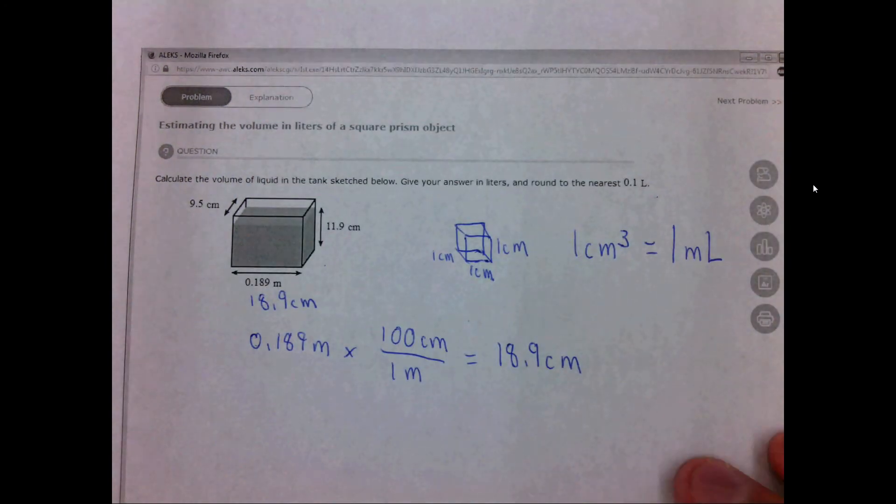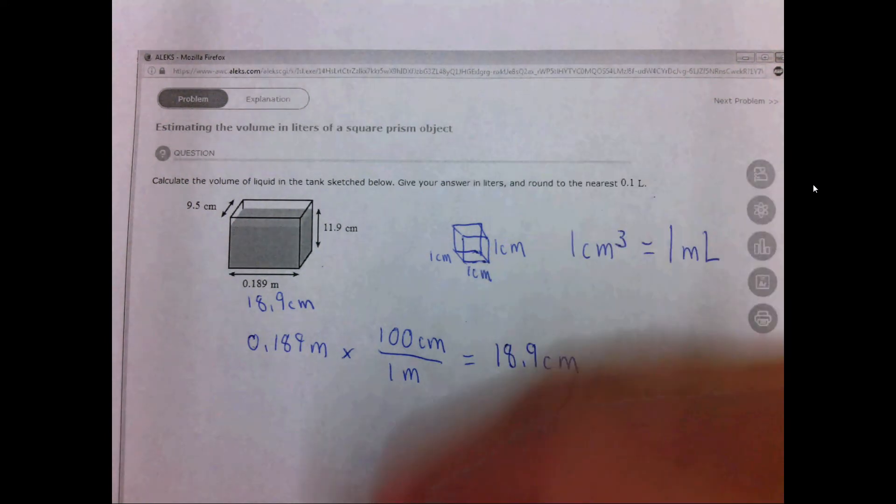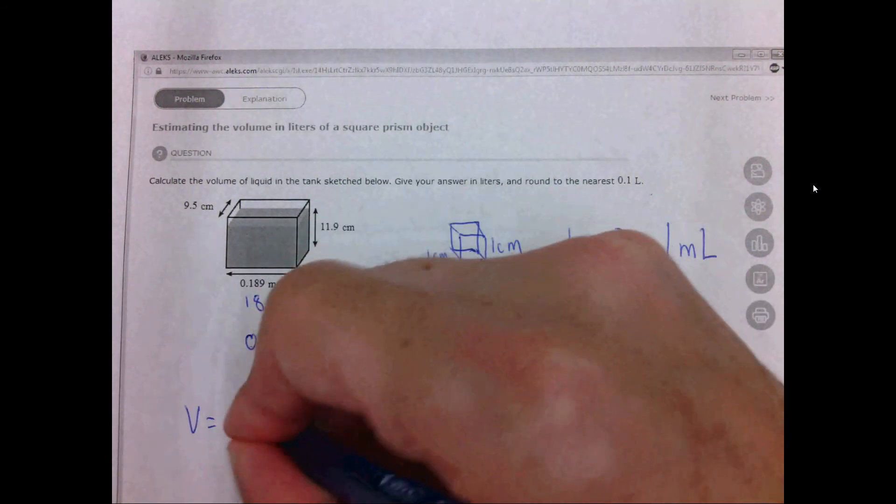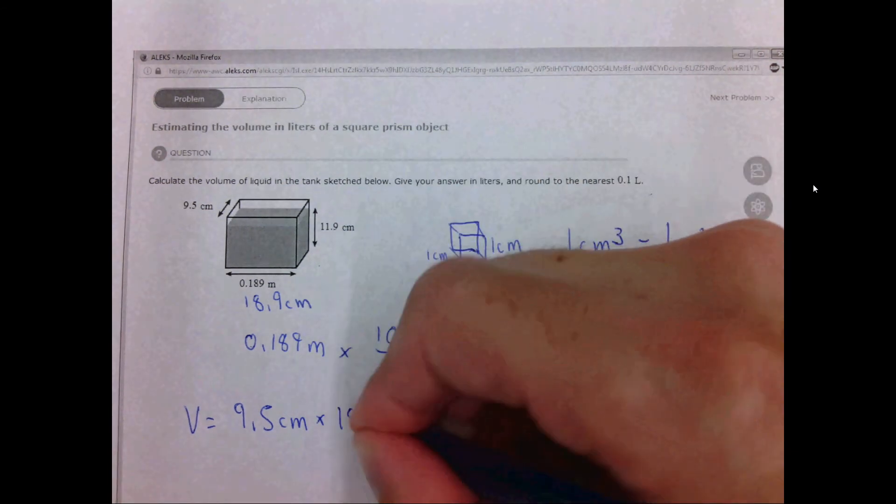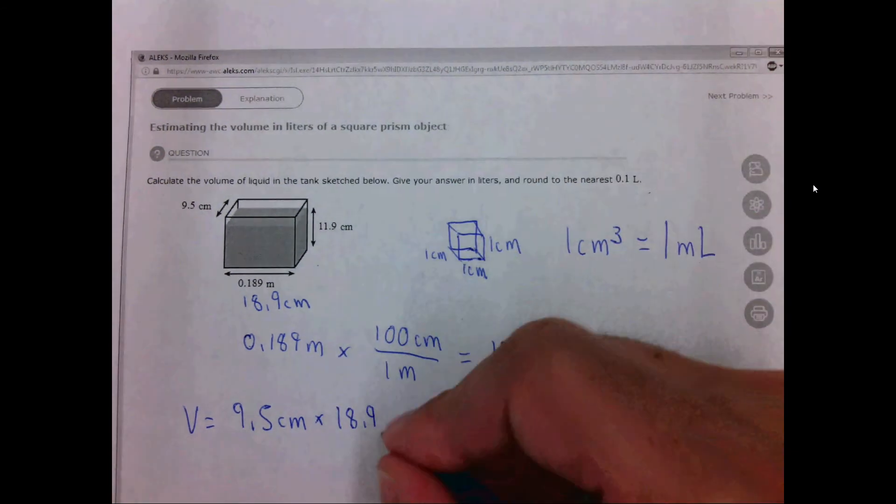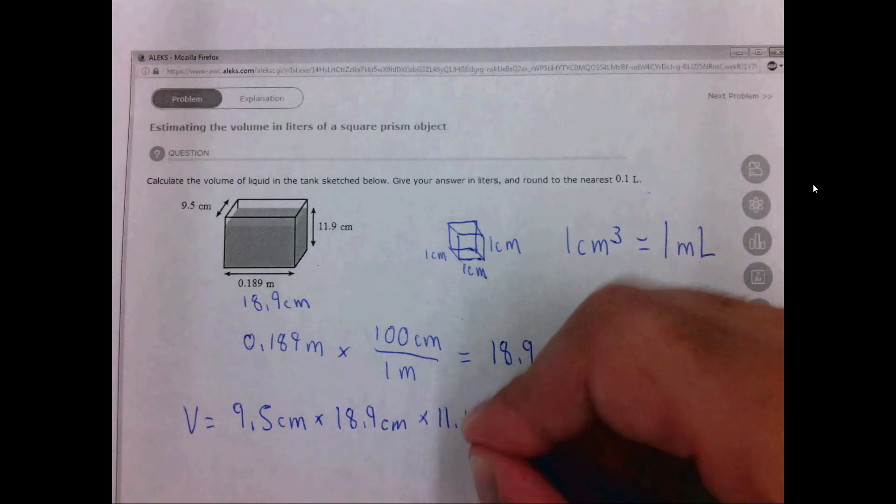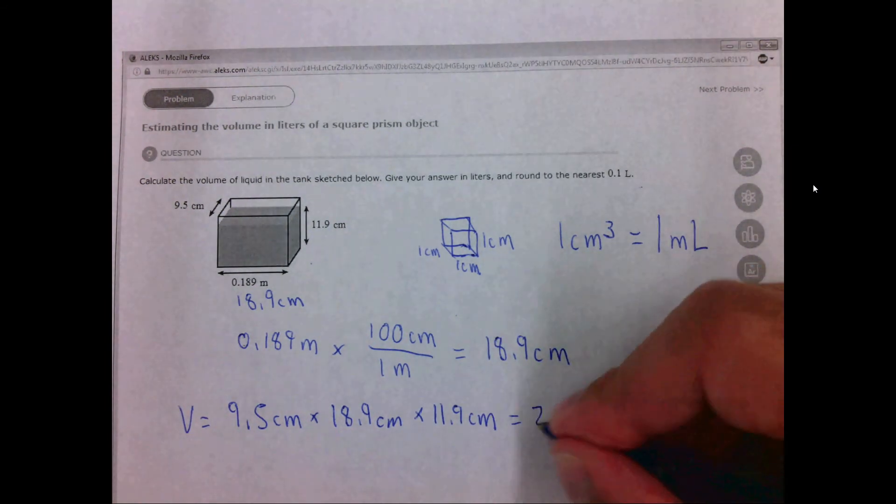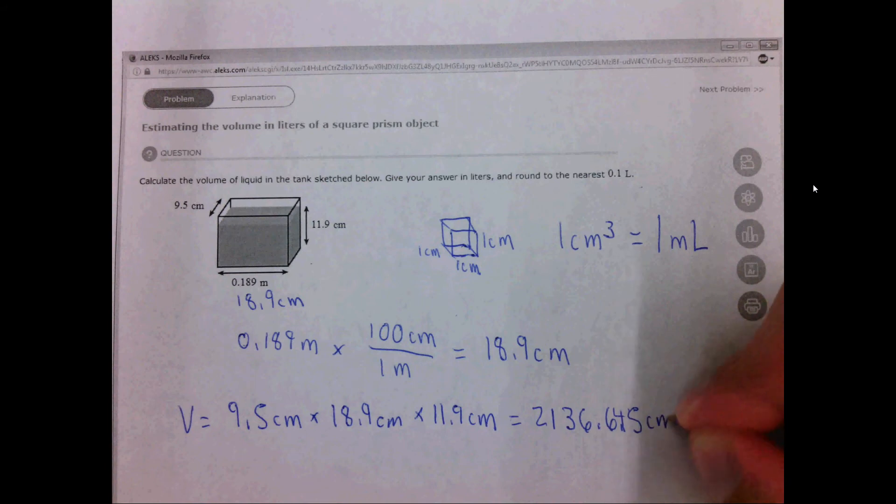Now we take the length times the width times the height and we can find the volume. So V equals 9.5 centimeters times 18.9 centimeters times 11.9 centimeters. And when you do that math, your calculator will give you 2136.645 centimeters cubed.